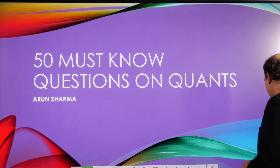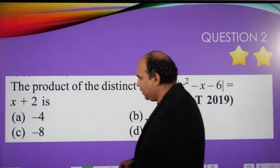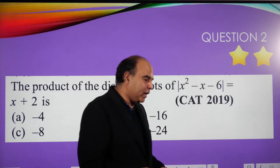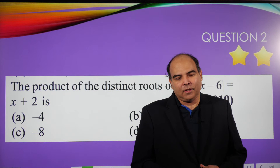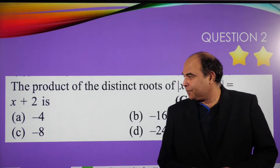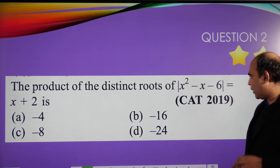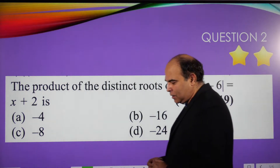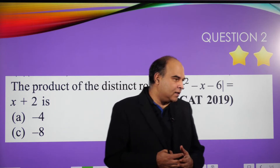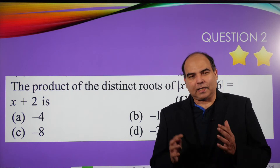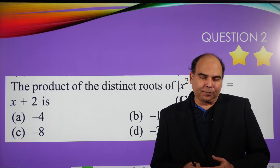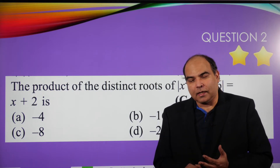Hey guys, welcome back to the channel. Sorry I've been a little tied up with a few things for the last few days. I'm doing a session on the 50 must-know questions, and this is the second in that series — marked with two stars for that reason. The question is from CAT 2019, and I've taken a screen grab from my book of previous CAT papers, which is from McGraw-Hill, available on Amazon. I'm starting this series with the algebra block first, and this is an interesting question because it tests similar things to what the first question tested.